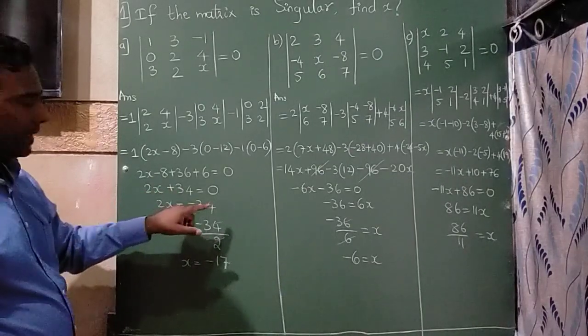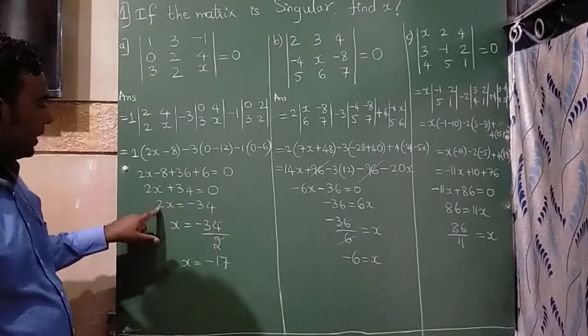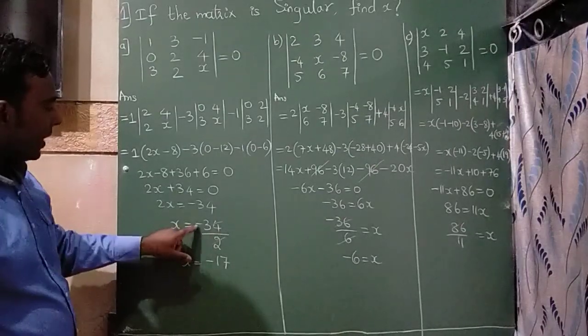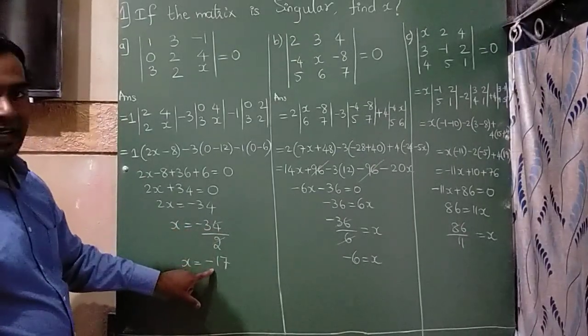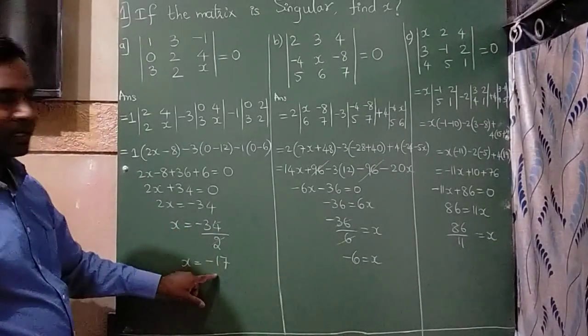Take this 34 on the right hand side, it will get minus 34. Take this 2 in the denominator. Minus 34 divided by 2 is minus 17. Therefore, x value is minus 17.